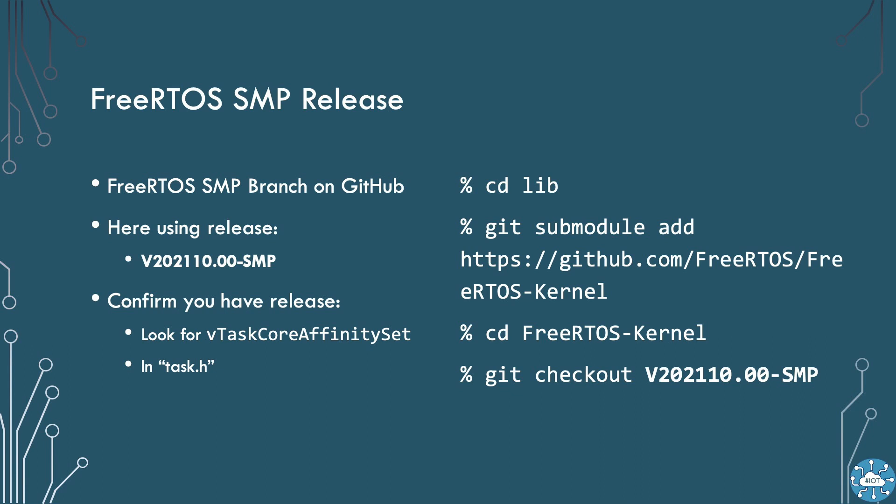In the example for this tutorial, I've used FreeRTOS SMP version v2021.10.00. This will already be available in the repository. For your own projects, you can add this using the command git submodule add to download the FreeRTOS kernel. Then from within the FreeRTOS kernel folder, issuing the command git checkout with a version to check out.